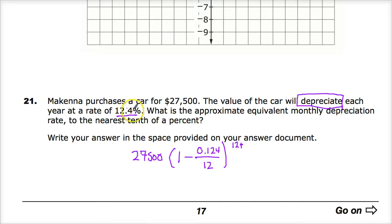It simply wants to know, if you have 12.4%, what's the equivalent monthly depreciation rate? So they just want you to talk about this. And since they want it in tenth of a percent, you didn't even have to convert it into a decimal. It's super annoying.